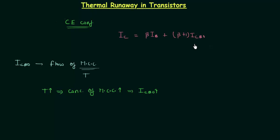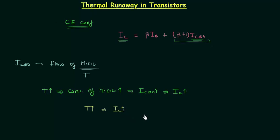From this equation you can see that when ICBO increases, beta plus 1 times ICBO will increase, and finally the collector current will increase. So we can say that when temperature increases, the collector current IC will also increase, or we can say that the collector current is directly proportional to the temperature. This is a very important point and because of this we have thermal runaway in transistors.